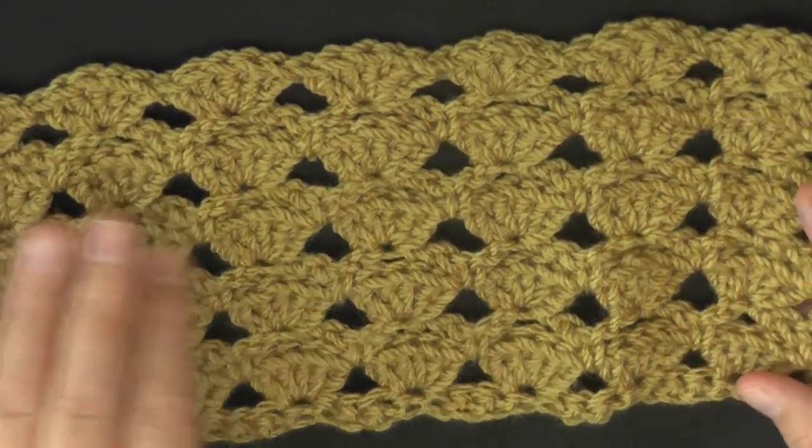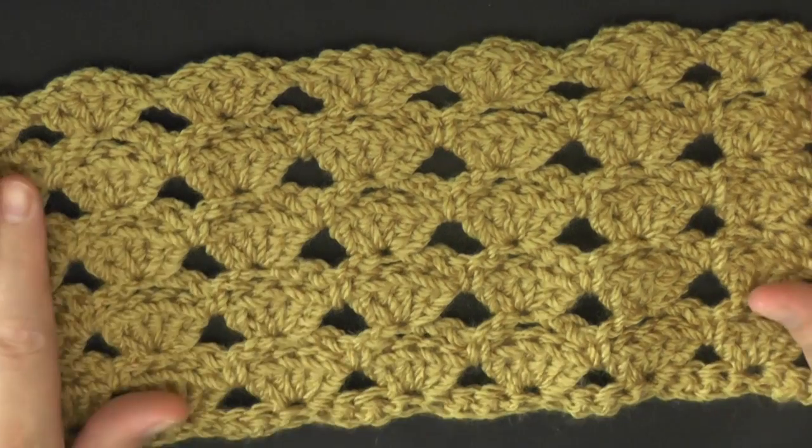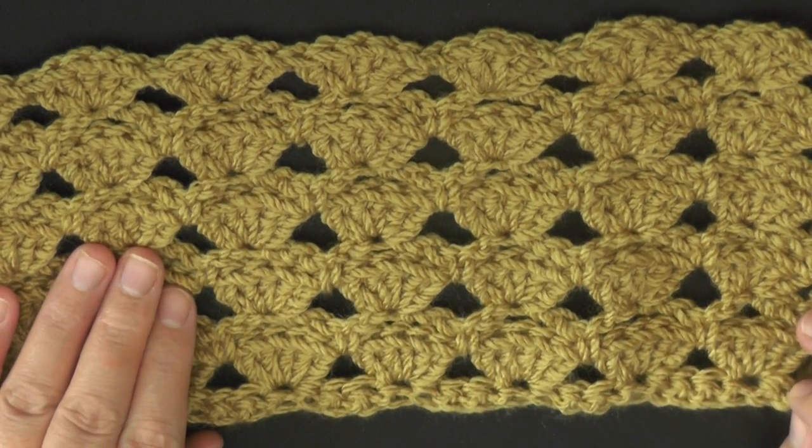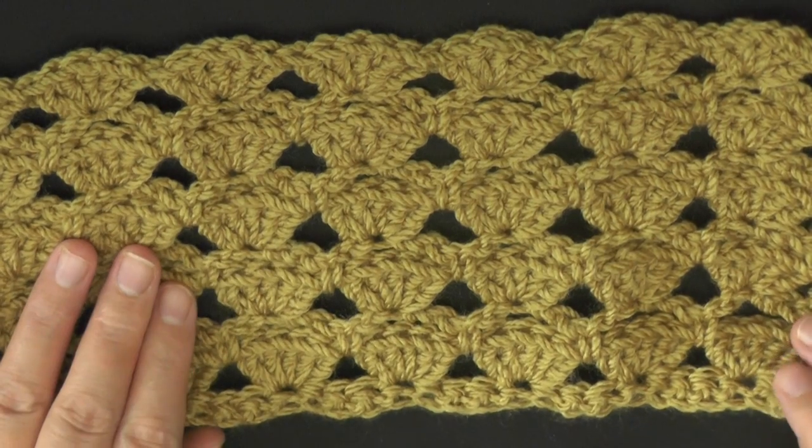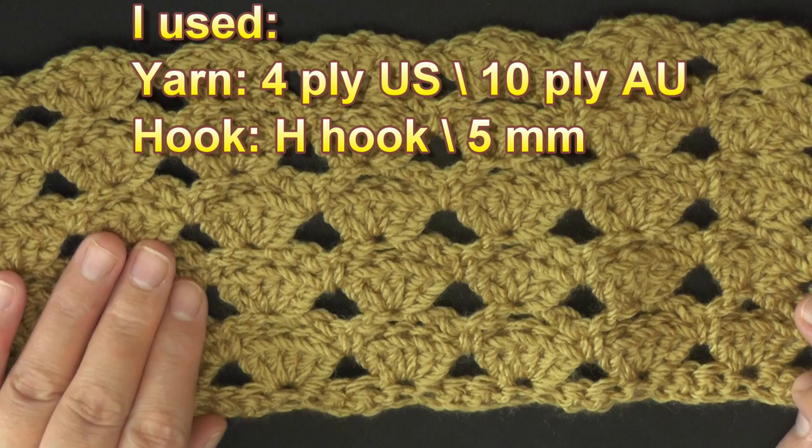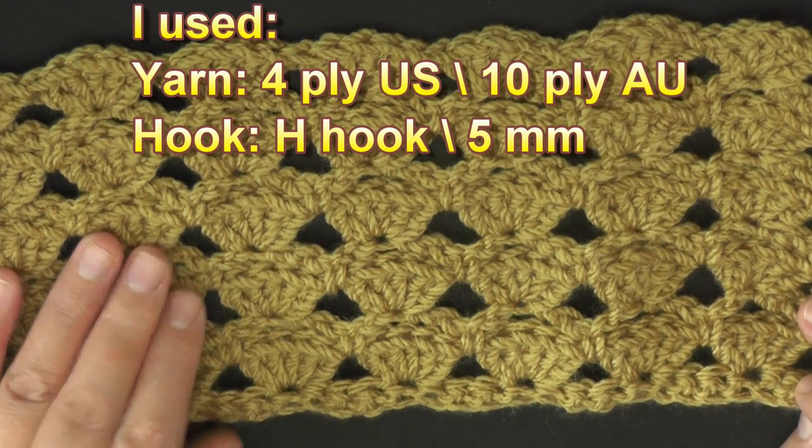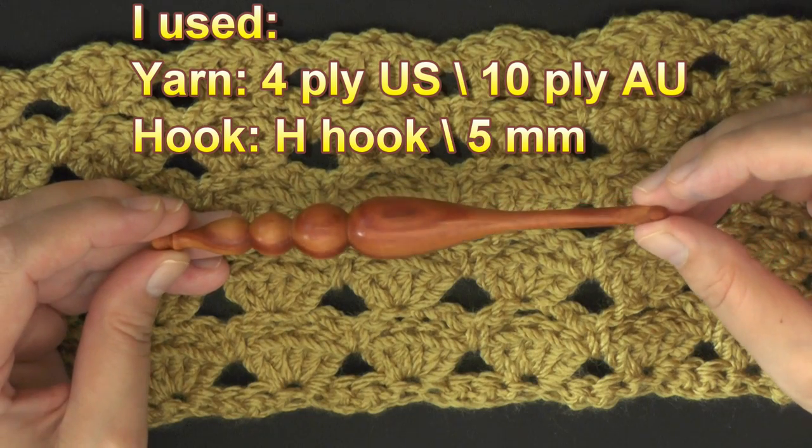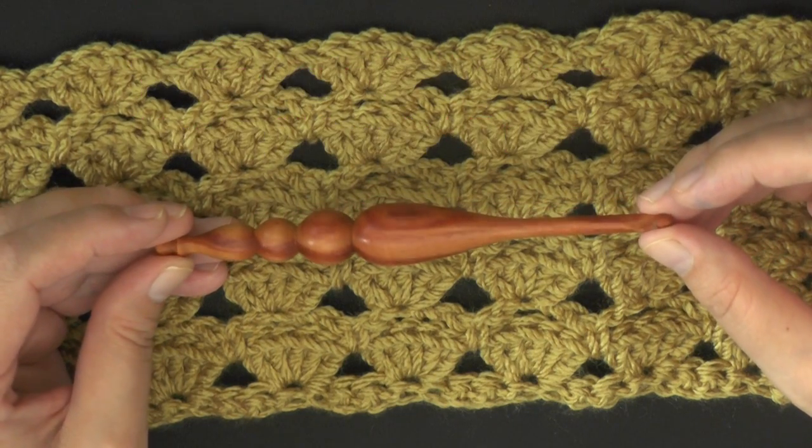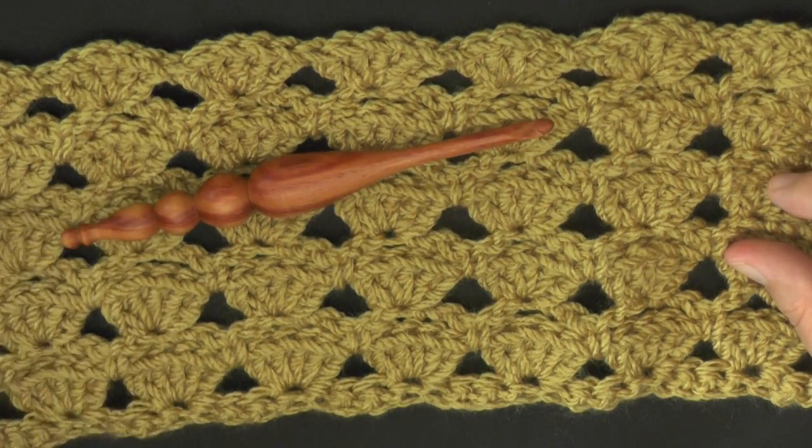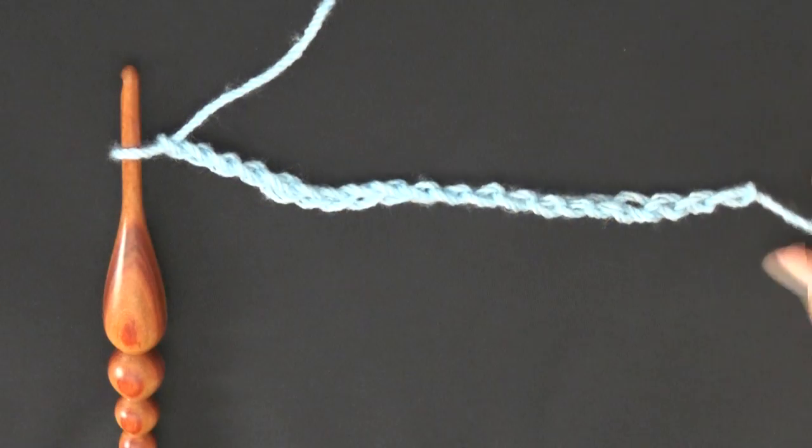So it's very simple to do. You can do this using any size yarn and any size hook that that yarn recommends. I use worsted weight yarn, which is 4-ply for the US, 10-ply for Australia, and I also used a 5 millimeter hook, which is size H in the US. Go ahead and grab your yarn and hook and we'll get started.